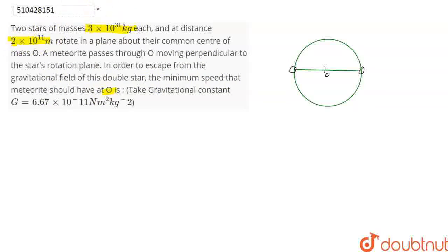See here, assume that star is 1, star is 2. And at this point, the meteorite will cross the plane, perpendicular to the plane. If plane is like a plane, the meteorite will cross this plane.